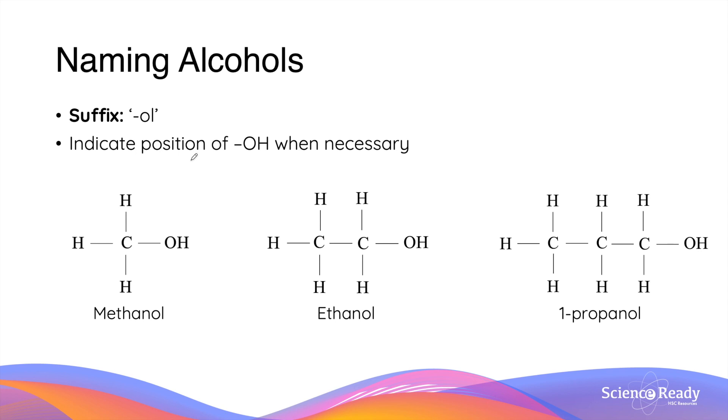The naming of alcohols follows all the rules that we've discussed already in another video. The only difference is that to denote the presence of an alcohol functional group, we need to add the suffix of O-L. So in the case of an alcohol with one carbon atom in its longest chain, this will be called methanol. Where there's two carbon atoms, ethanol, and in the case where there's three carbon atoms, this will be propanol. And in the propanol molecule, since the hydroxyl functional group can be bonded to the first carbon atom or the second carbon atom, this is specifically called 1-propanol. So make sure to indicate the position of the alcohol group when necessary.